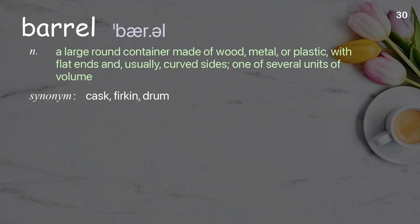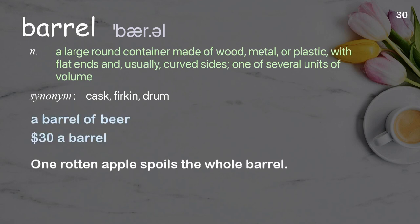Barrel: a large round container made of wood, metal, or plastic, with flat ends and usually curved sides; one of several units of volume. Examples: a barrel of beer; $30 a barrel. One rotten apple spoils the whole barrel.